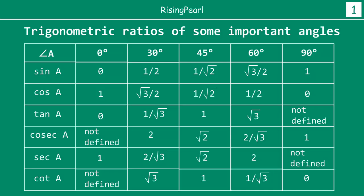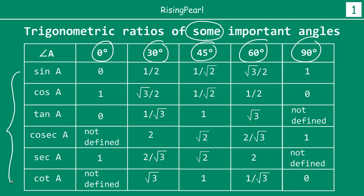Recall that earlier, a few episodes ago, we found out the trigonometric ratios of some very important angles — 0 degrees, 30 degrees, 45 degrees, 60 degrees, and 90 degrees. I am going to provide the link underneath this video because we have earlier looked at how to calculate the 6 trigonometric ratios for each of these angles. This table is just a consolidation of all of them.